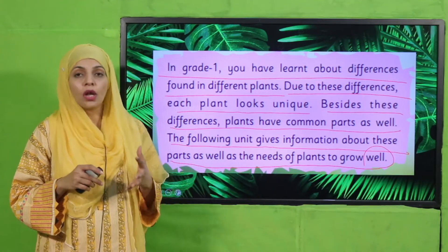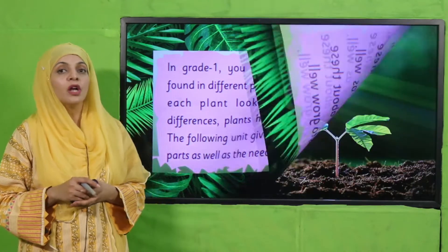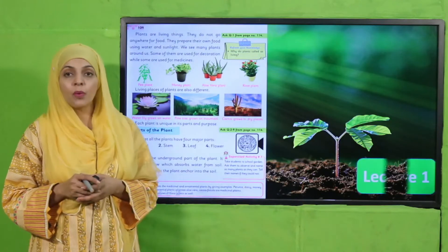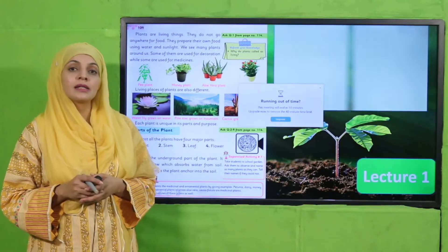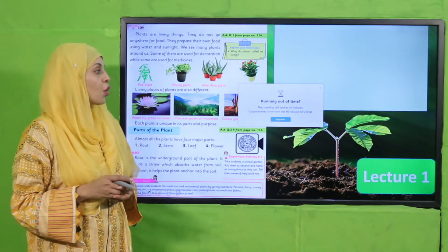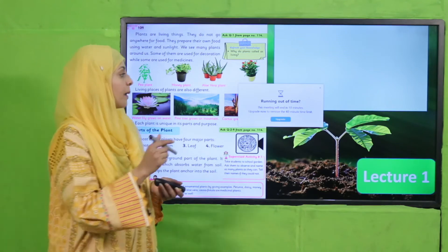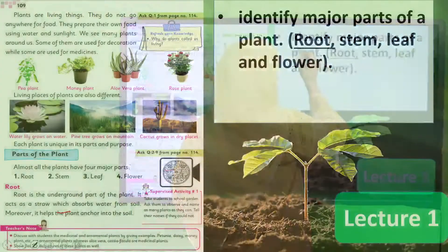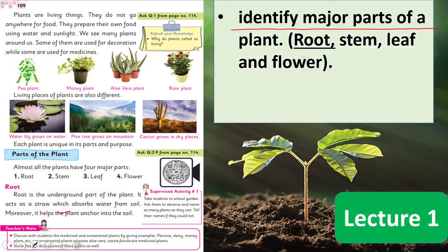So my dear students, in Lecture number 1, let's look at the student learning outcomes that will be covered. Students will be able to identify the major parts of a plant, like root, stem, leaf, and flower. We will discuss the root in detail.